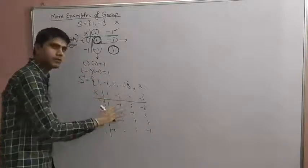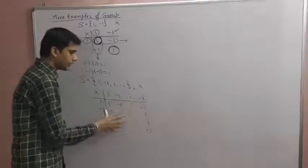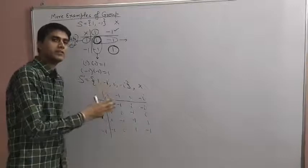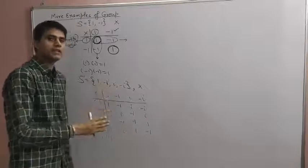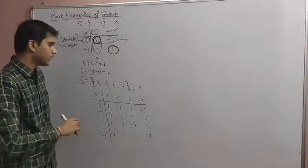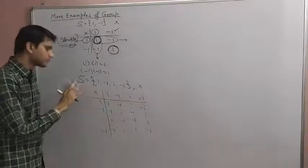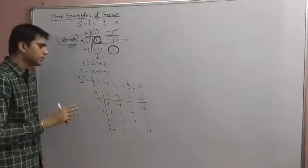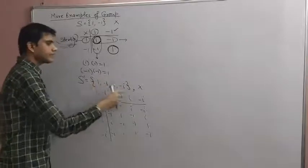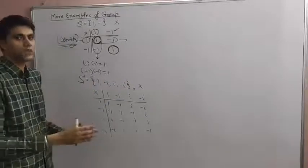When we multiply any elements of S' in any order, the results are all elements of S'. All entries in the composition table belong to S', so multiplication is a binary operation on S' and the closure property is satisfied.